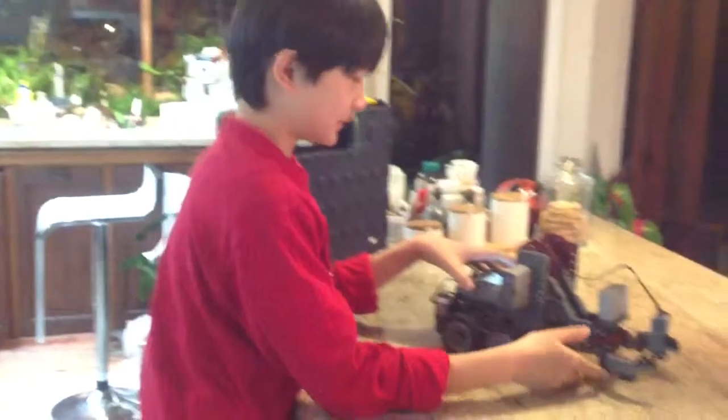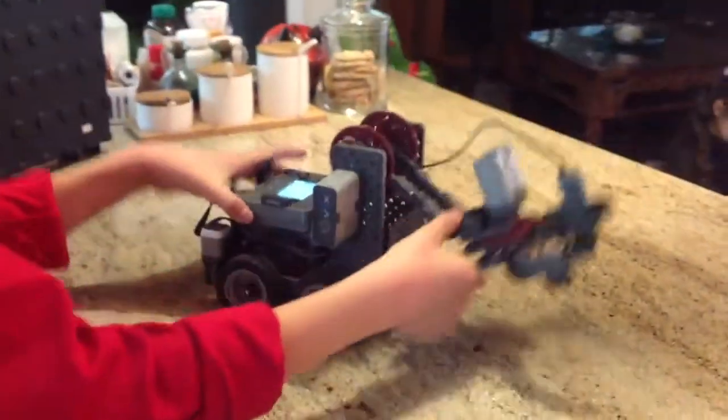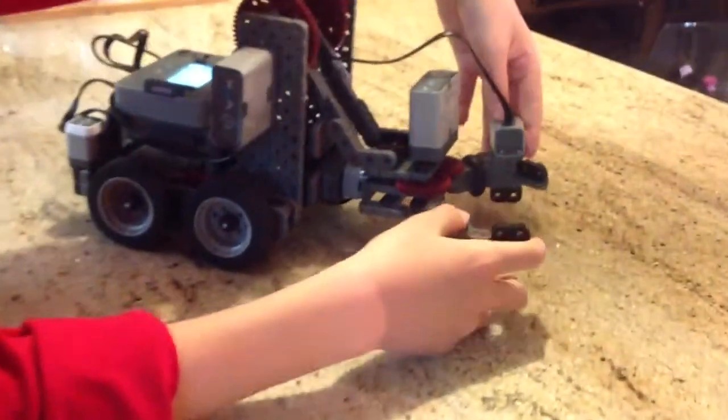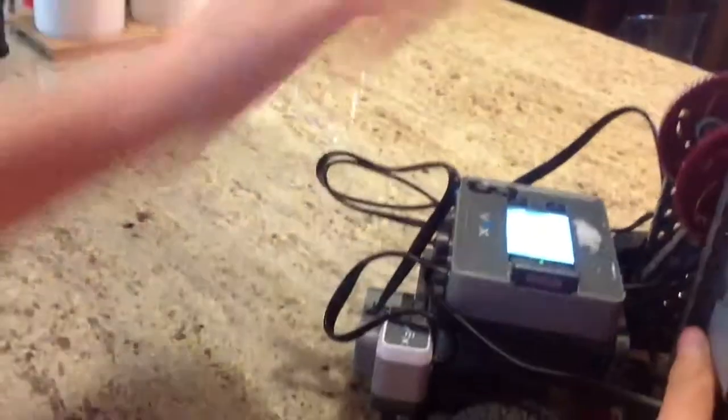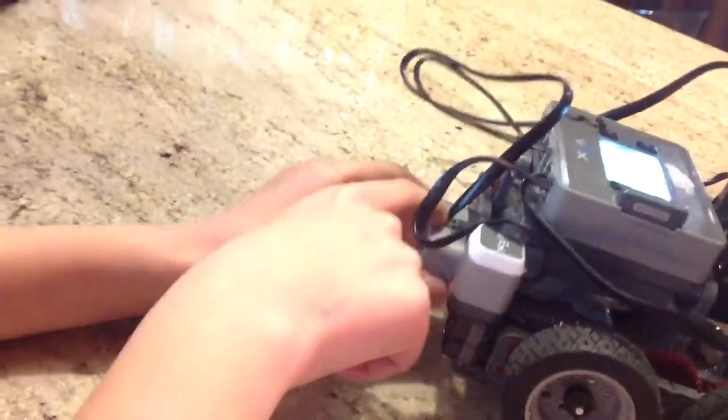William will explain the robot and try the mission. Here's our robot. It has one color sensor right here. Here is the bumper switch sensor. Here is the touch LED and here's the distance sensor.